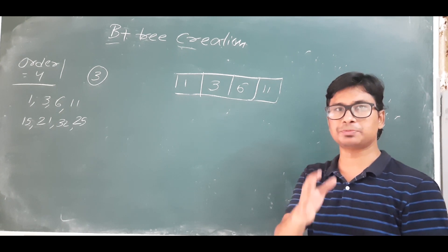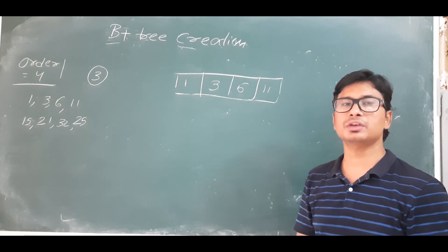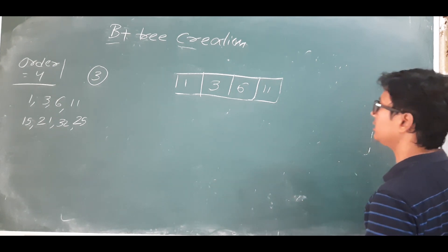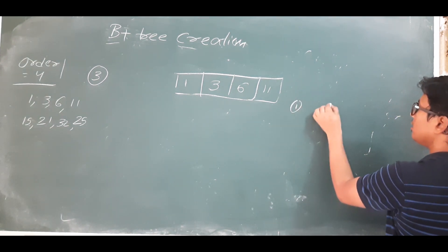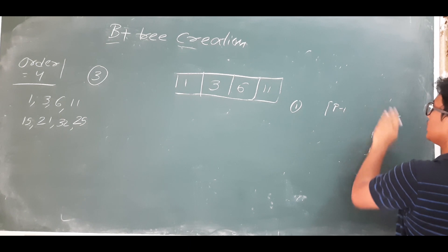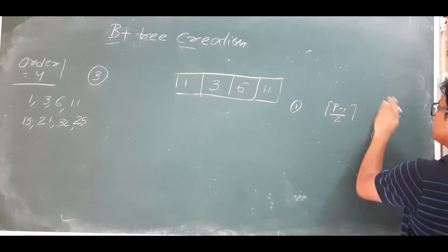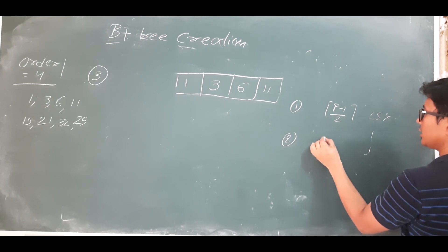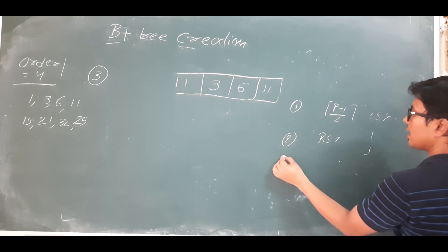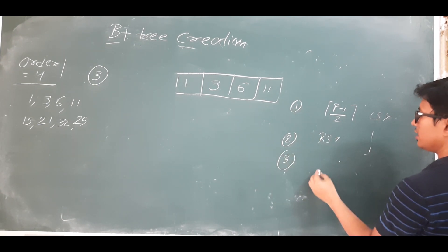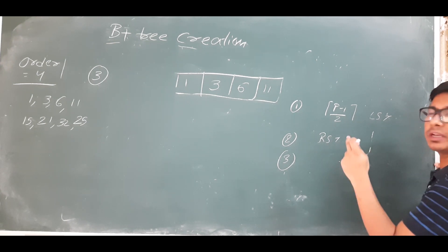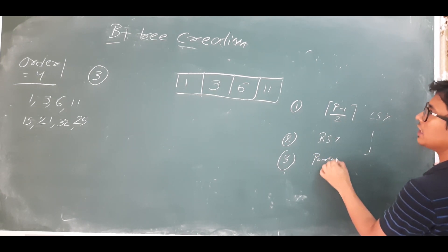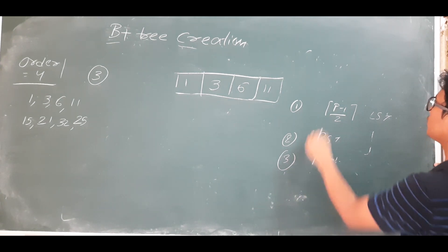These three steps are explained in my previous videos — please go through those. Step one: p minus 1 by 2 elements should be kept in the left subtree. Remaining elements should be kept in the right subtree, and the minimum element from the right subtree should be kept in the parent node. The p value here is 4.